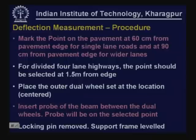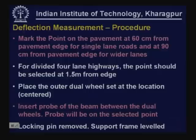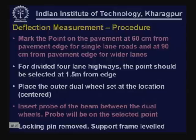The procedure for measuring deflections using the Benkelman beam begins with marking points on the pavement surface. For single lane roads, points are selected 60 cm from the pavement edge — the assumed wheel path location. For wider lanes, the wheel path is approximately 90 cm from the edge. For divided four-lane highways, the wheel path is considered at 1.5 meters from the pavement edge. Points are selected along the outer wheel path for deflection measurements.